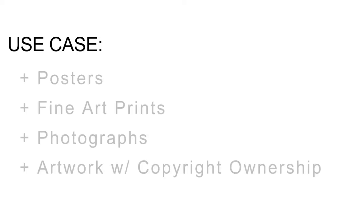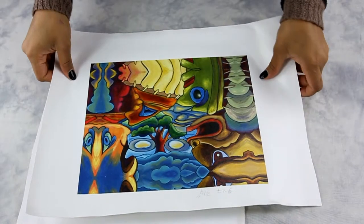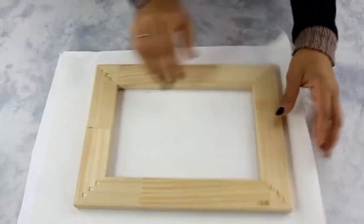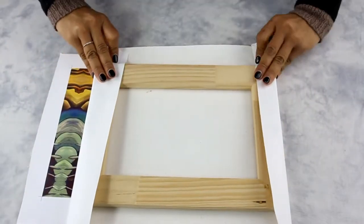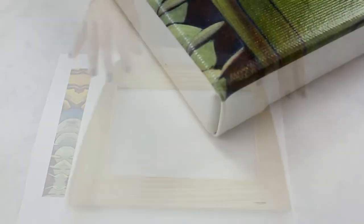This method is most commonly used to reproduce posters, fine art prints, photographs, and artwork with copyright ownership. Once you have your print transferred on a canvas material, you may display your artwork as a canvas gallery wrap.